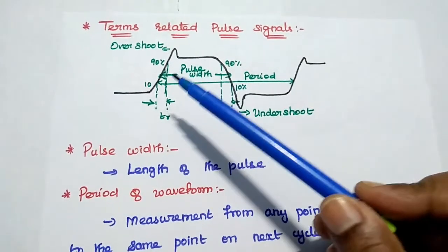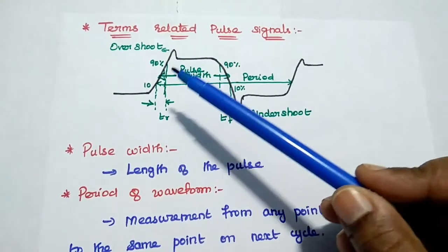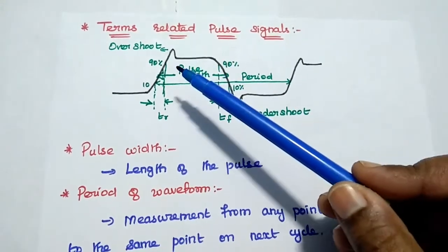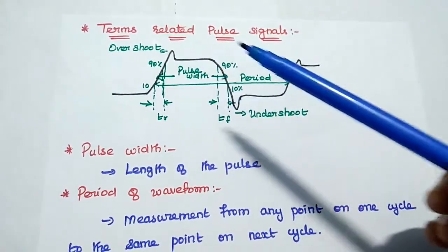Similarly overshoot. Overshoot occurs when the rising edge of a waveform exceeds its maximum value. That is called overshoot.